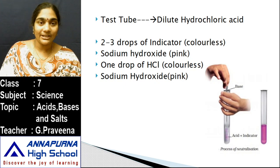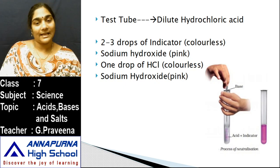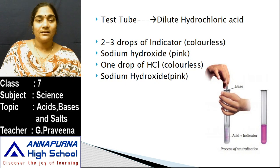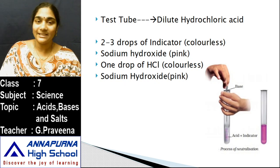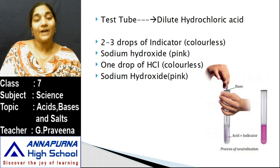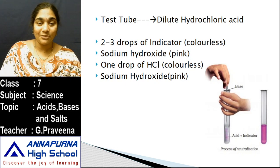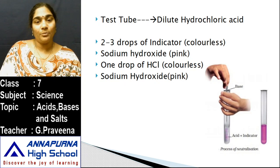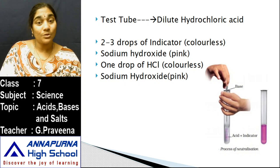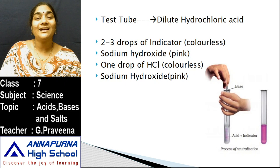To recap: we took a test tube, added hydrochloric acid, then added phenolphthalein. The indicator, which is pink in color, remains colorless in an acidic solution. When we added 2 or 3 drops of sodium hydroxide, we observed that the pink color reappeared. When we added one more drop of hydrochloric acid again, the solution returned to colorless.